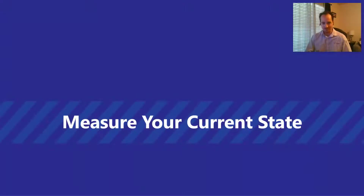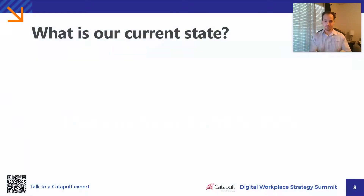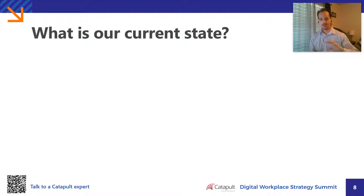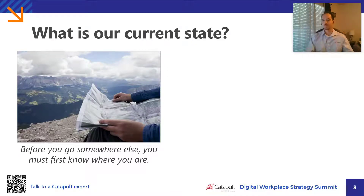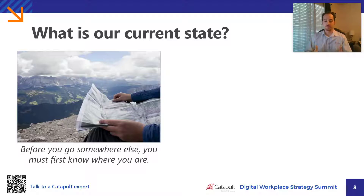So let's jump right in. As I mentioned previously, the first step is to measure your current state. A quick plug to scan the QR code in the bottom left corner of this presentation — that will give you more information on how Catapult Systems can help you get started. Now, cliche as it may sound, with these types of initiatives, it is true that before you go somewhere else, you must first know where you are. A good first step is to simply understand what tools and technologies your organization is using to manage its data.